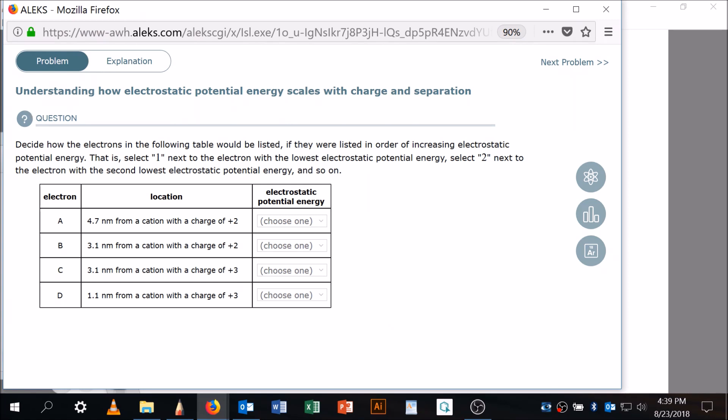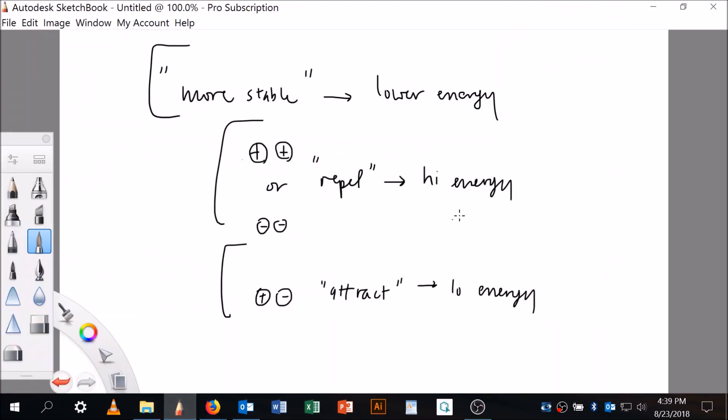The question was understanding how electrostatic potential energy scales with charge and separation. So here's the question: decide how the electrons in the following table would be listed if they were listed in order of increasing electrostatic potential. So let me come over here.